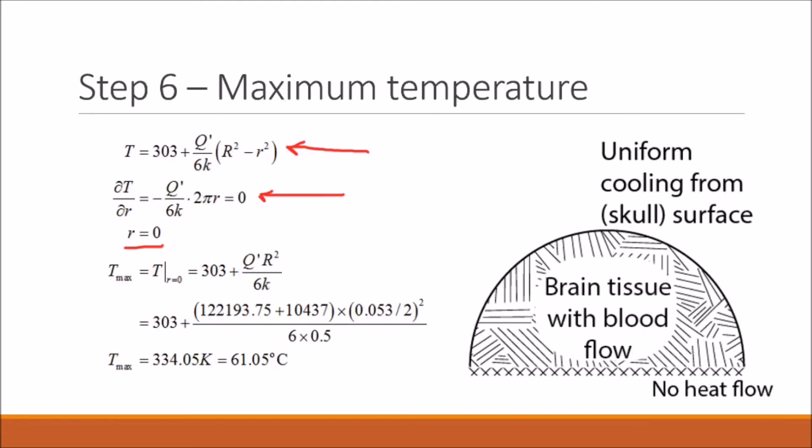Now we can make a mental check at this point and see that it makes sense for the maximum temperature to occur at r equals zero. Because if heat is being lost through this outer surface, then the point furthest away from the outer surface should be where the maximum temperature occurs, which in fact it does.